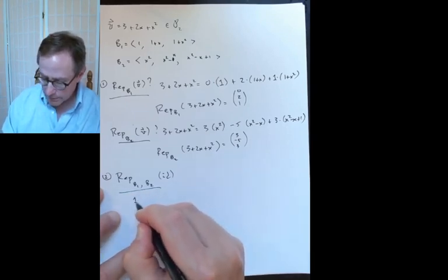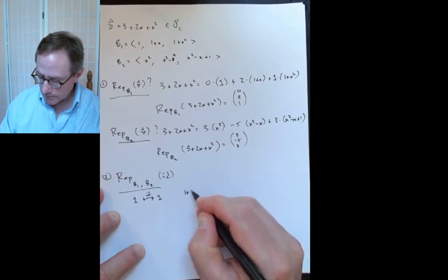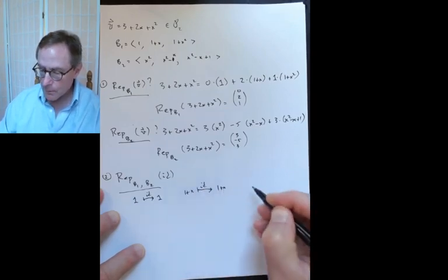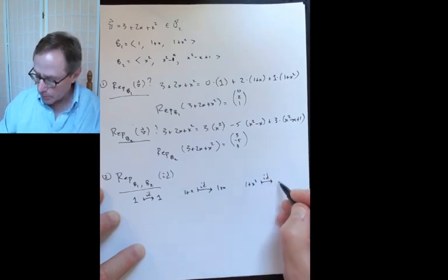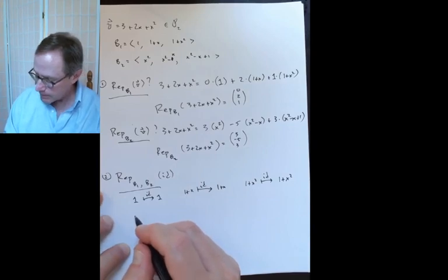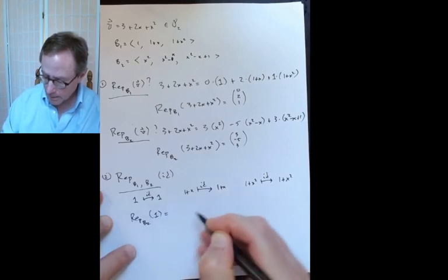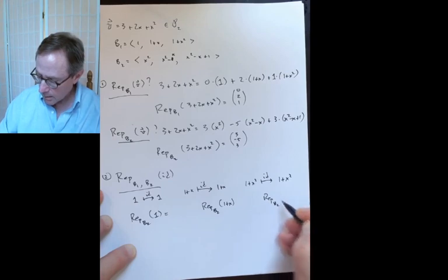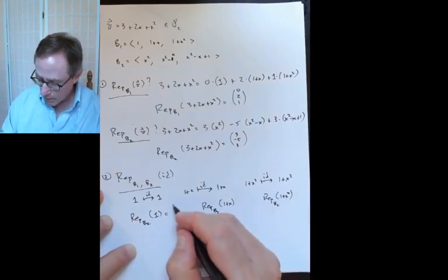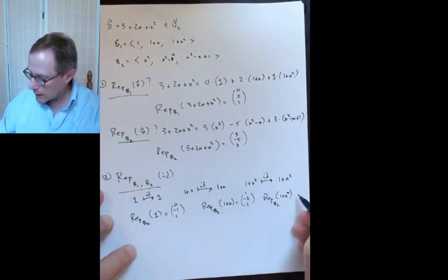You ask yourself: what happens to the first basis vector under the identity map? What happens to the second? What happens to the third? Then you represent each of those — the 1, the 1 plus x, and the 1 plus x squared — with respect to B2. I get (0, minus 1, 1) for the first, (1, minus 2, 1) for the second, and (1, minus 1, 1) for the third.